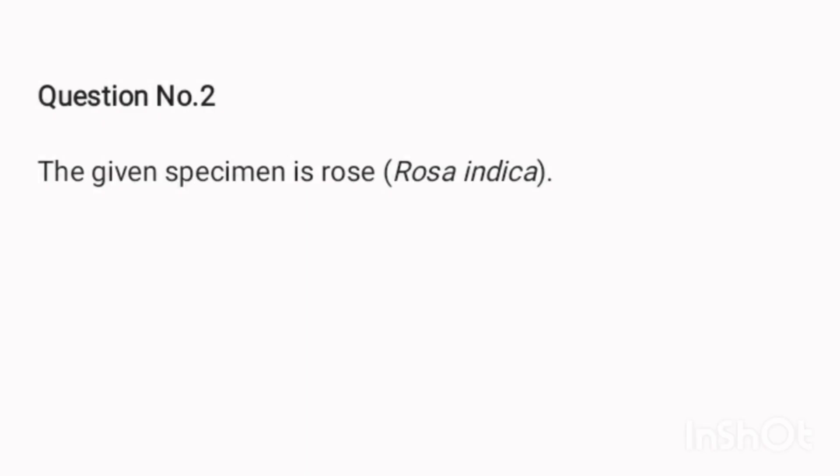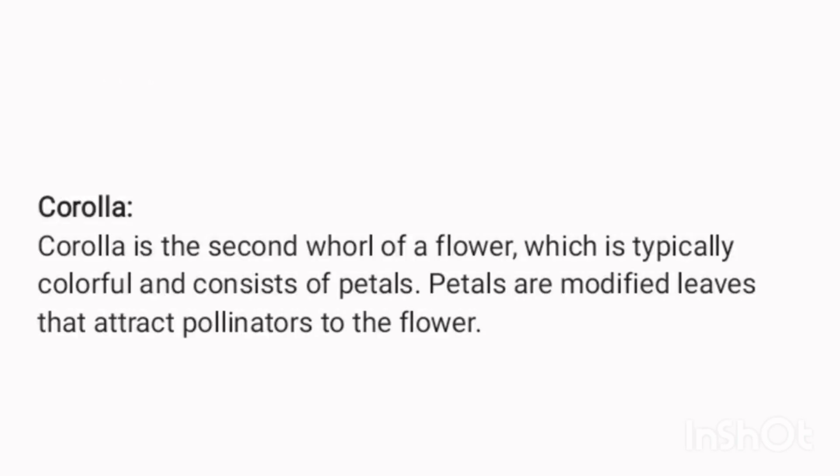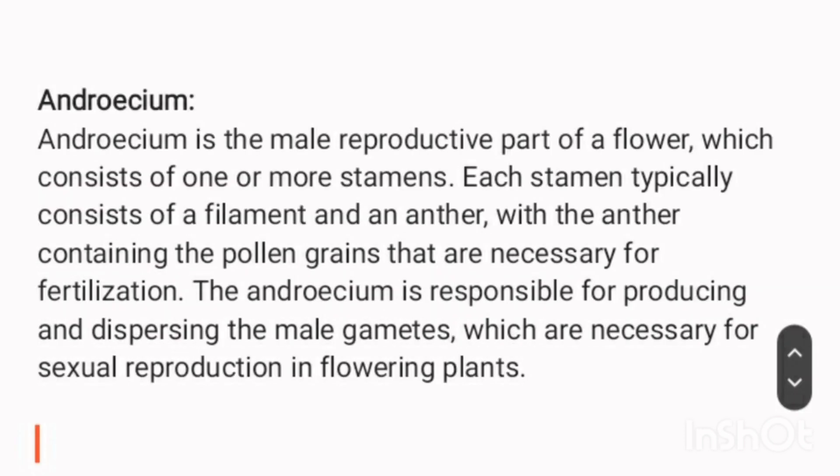Number 2. The given specimen is rose. Corolla is the second whorl of a flower, which is typically colorful and consists of petals. Petals are modified leaves that attract pollinators to the flower.